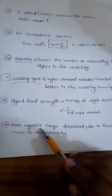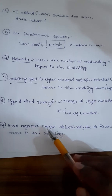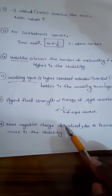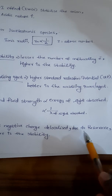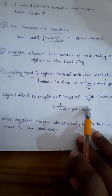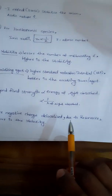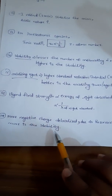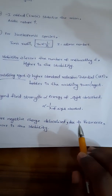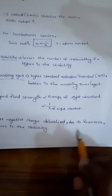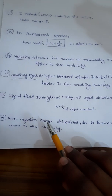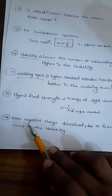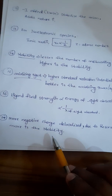Next one: if more negative charge is delocalized due to resonance, then more is the stability. That is, resonance means delocalized charge, and more delocalization leads to more stability.